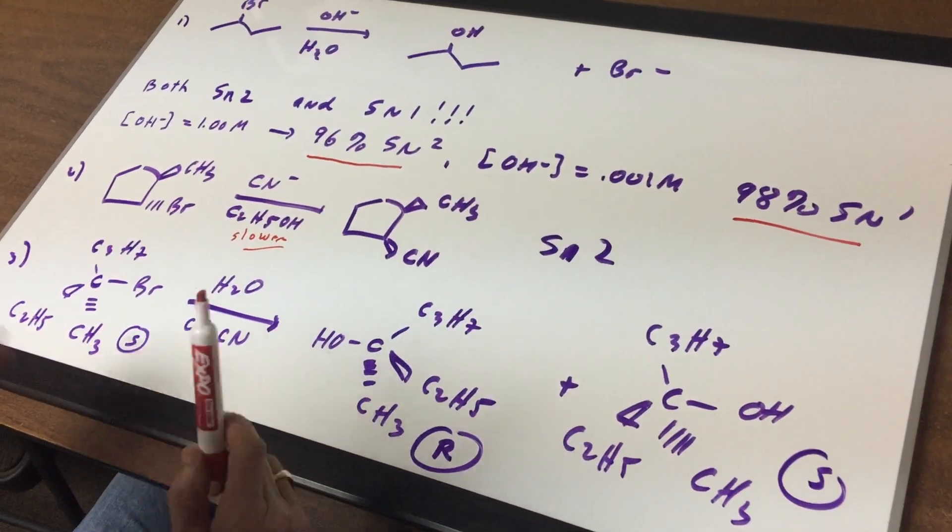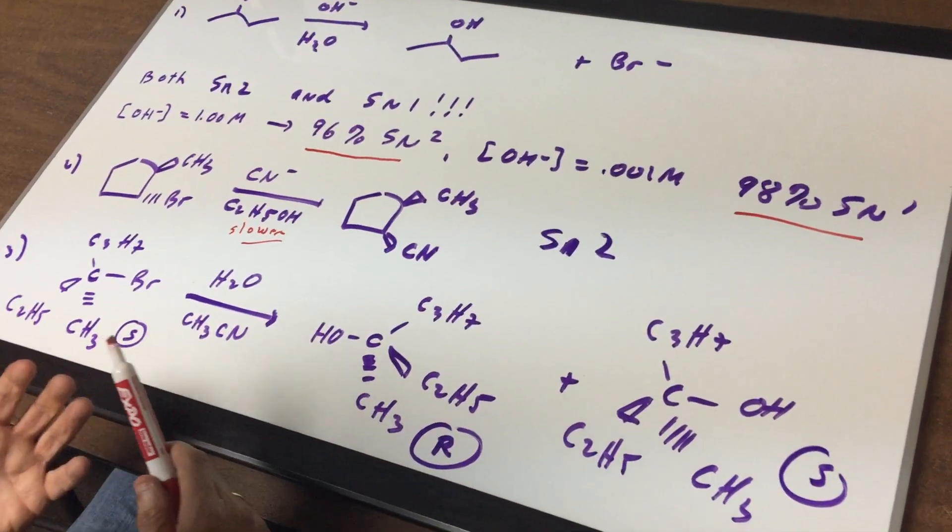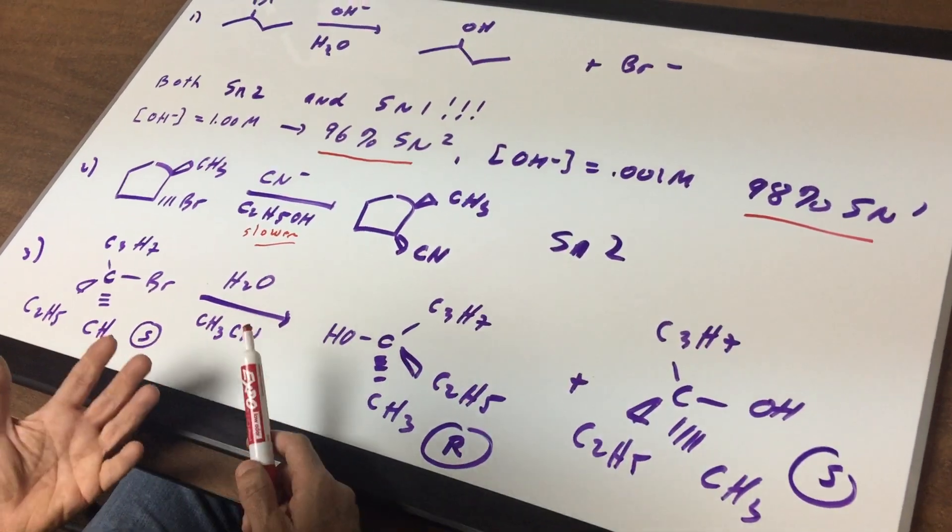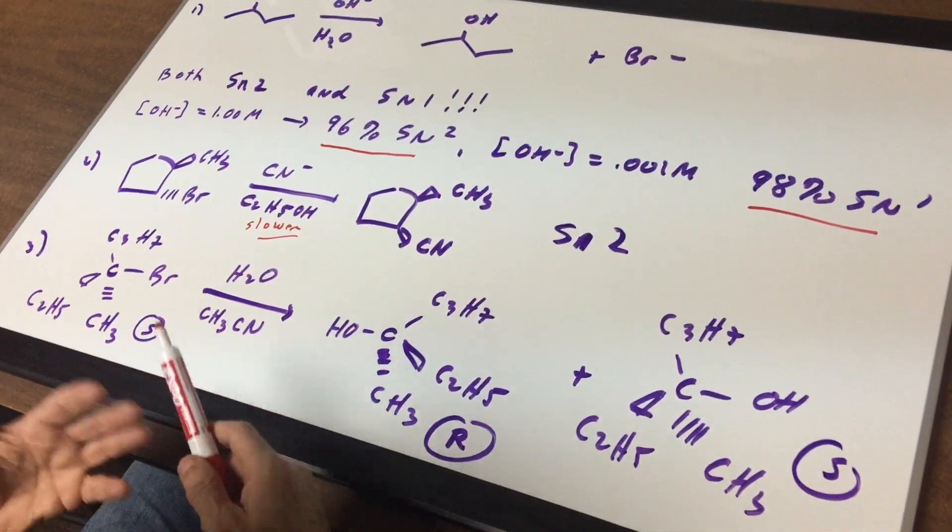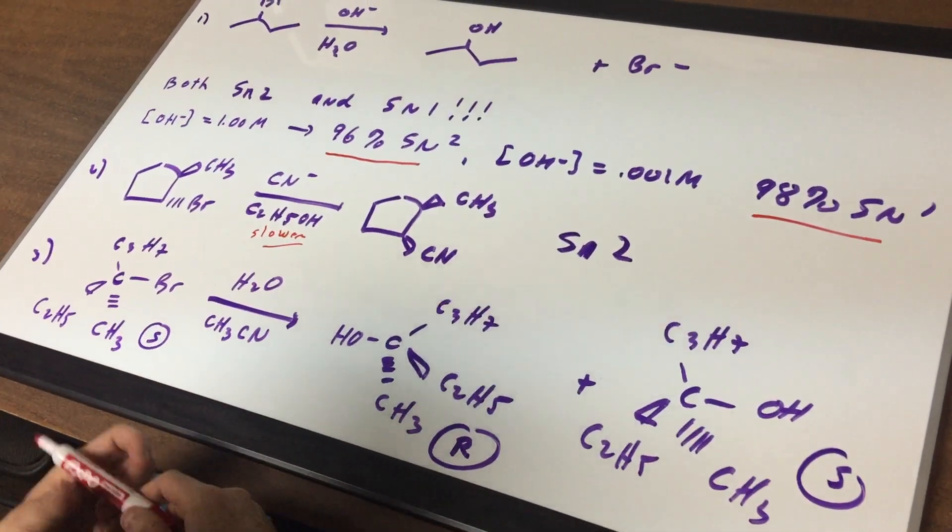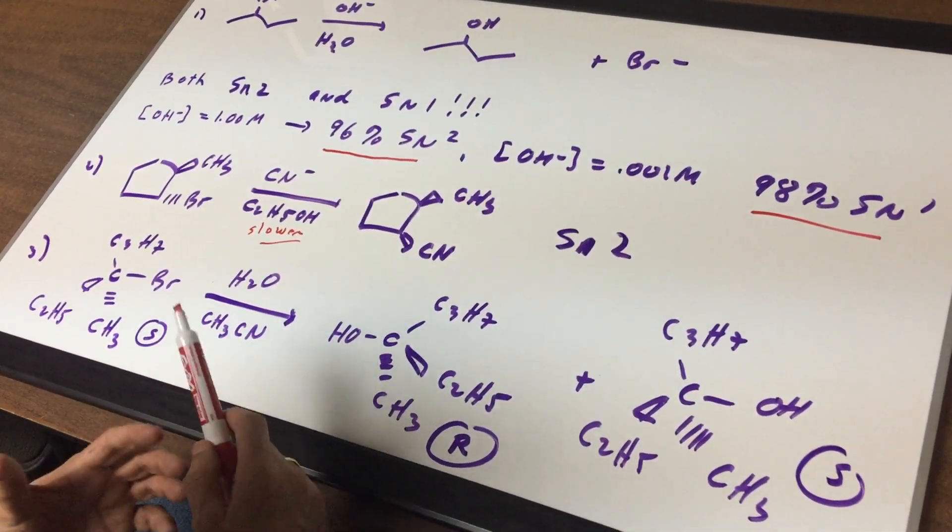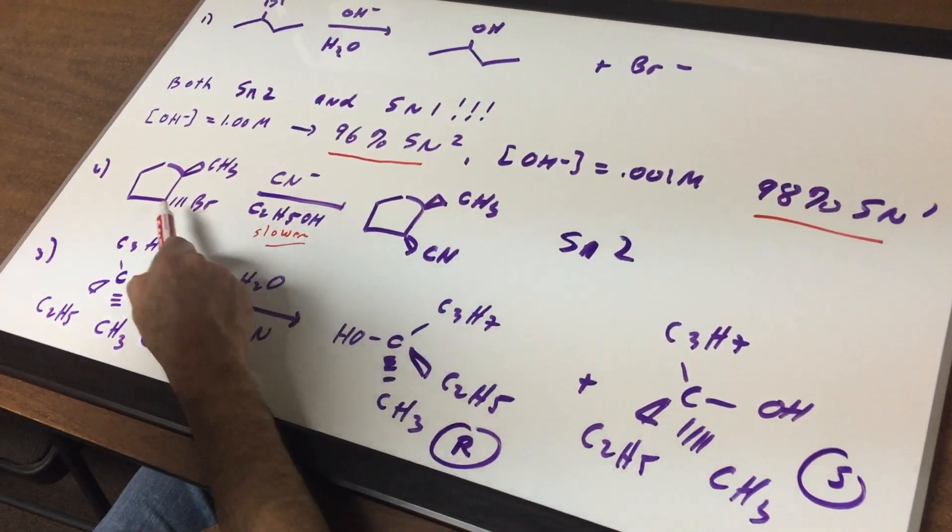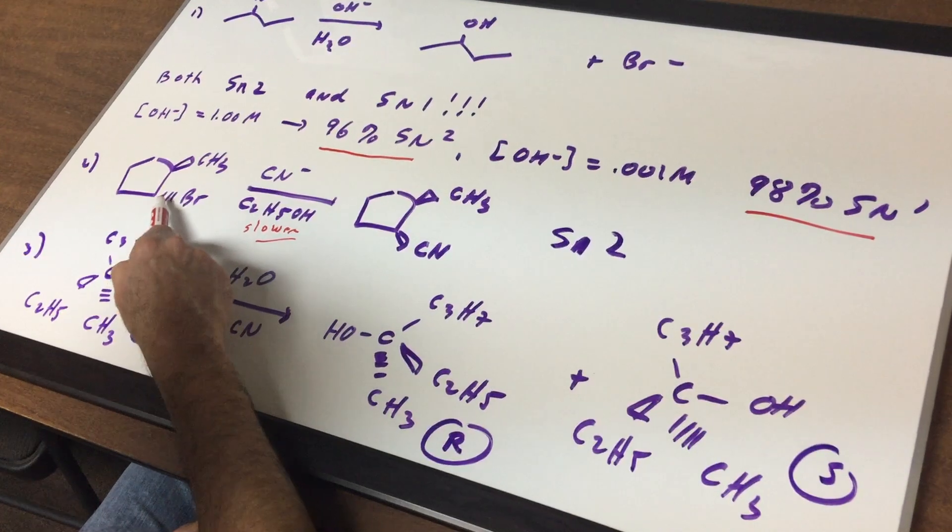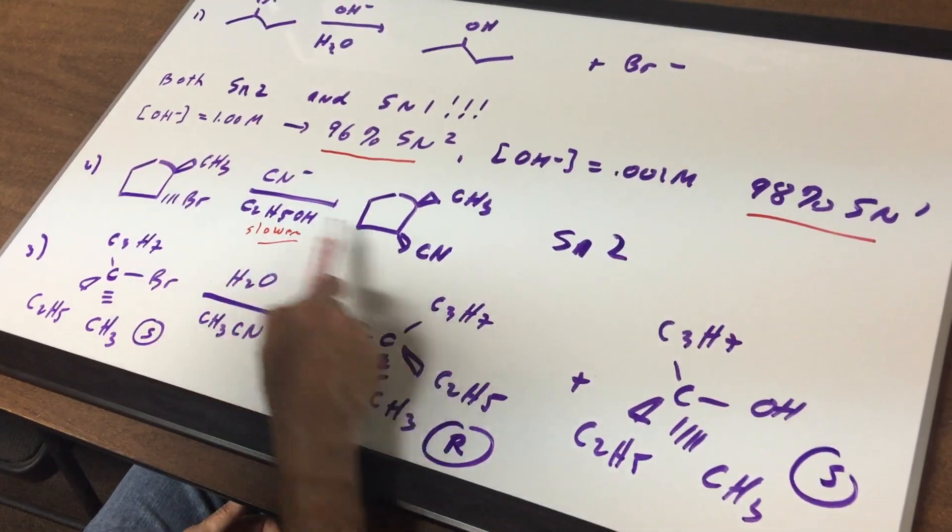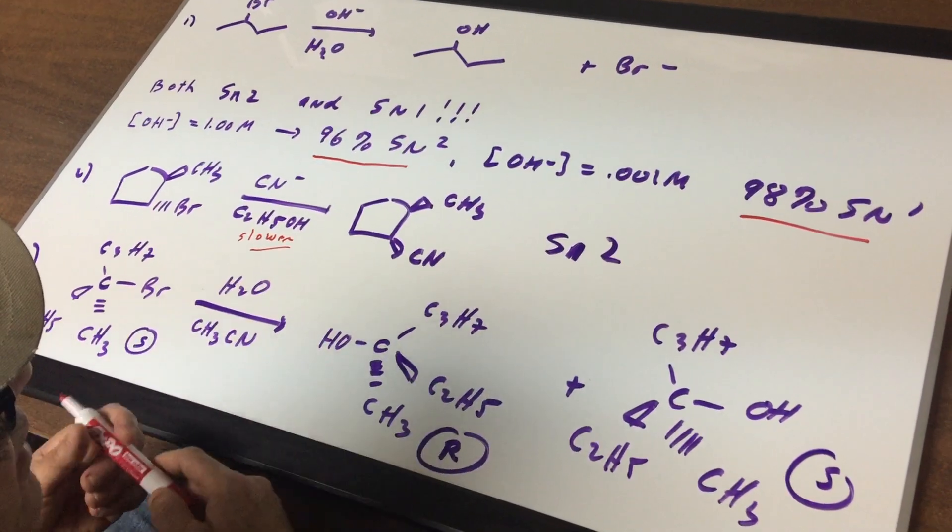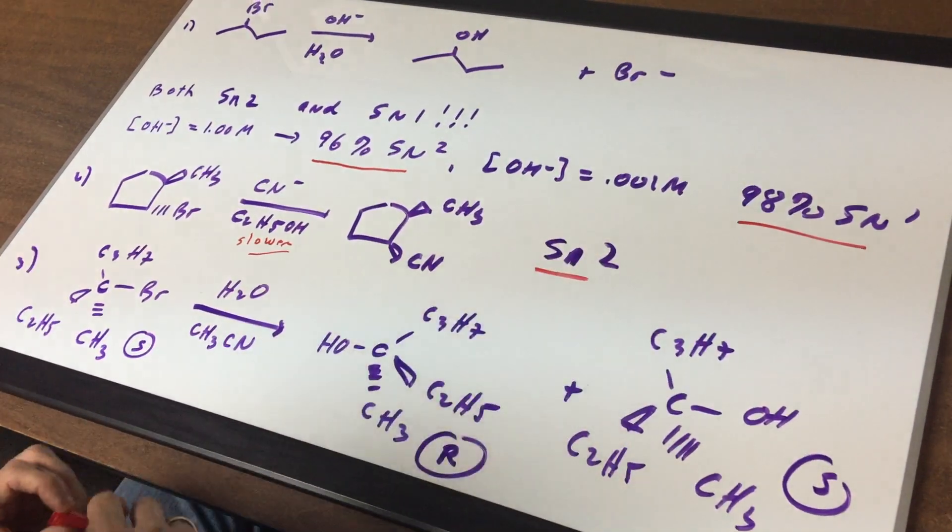But not if the nucleophile is super strong, like CN- is super strong. If you had methylmercaptide, like CH3S-, that would be very strong. Then it would favor the SN2, but it would be slower. So this would be a slower SN2. I'm hoping you can see this wedge or this dash becomes a wedge and therefore we do the inversion and we form the SN2 reaction.